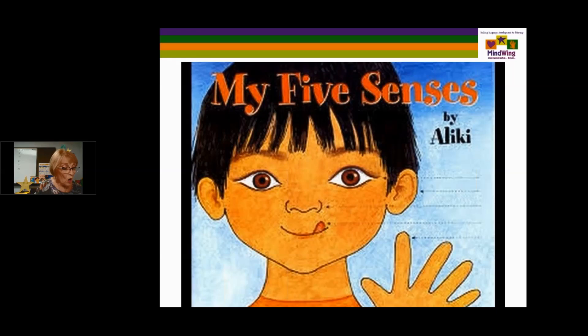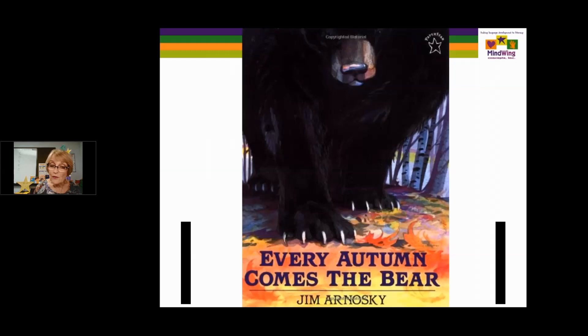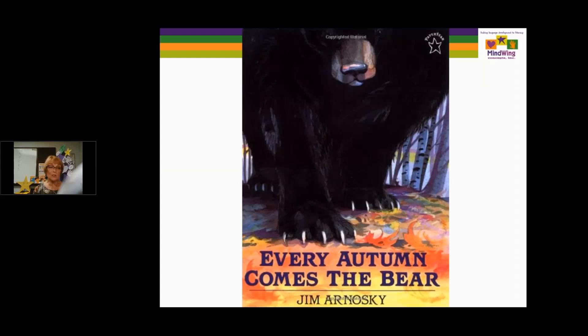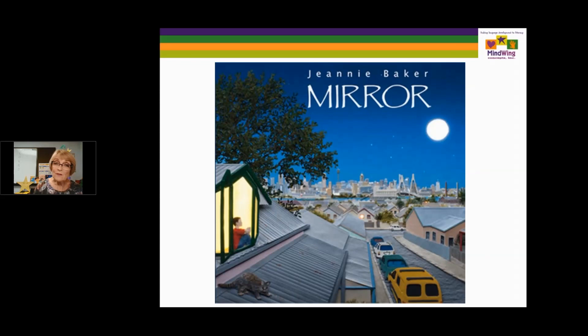All five senses are each on one of the tips of the star, which indicates the setting. The next book is Every Autumn Comes the Bear, about a particular time of year — autumn. The illustrations are full-page watercolors in vibrant colors to represent actions within a setting. The third one is Mirror, which shows facing pages comparing and contrasting two different cultures — one from Morocco and one from Australia — showing how these two cultures are more the same than different. It's wordless and the illustrations are collage.